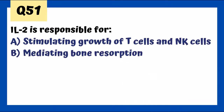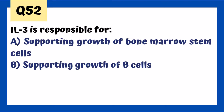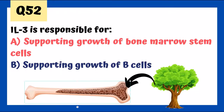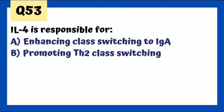IL-2 therapy can be used where we want to stimulate growth of T-cells and natural killer cells, for example in renal cell carcinoma. IL-3 supports growth of bone marrow stem cells. IL-4 promotes Th2 class switching — mnemonic: 'two beg for help' — two for Th2 cells, beg for B-cells and IgE/IgG class switching, help for helper T-cells.